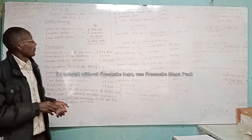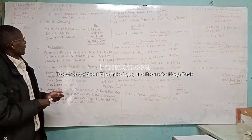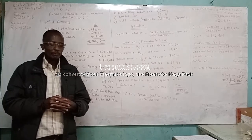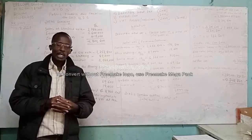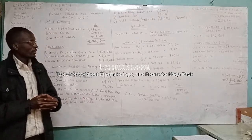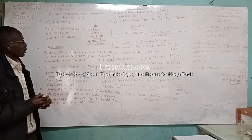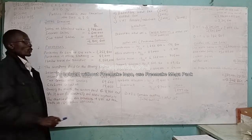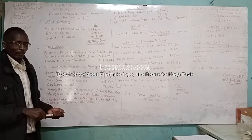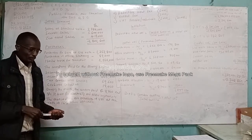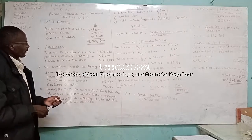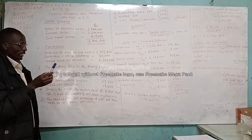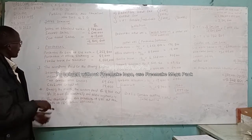We will look at a public finance and taxation paper for ATD, that is Accounting Technician Diploma for CASNEP, which was tested November 2017, question 2c. You can still get that paper from CASNEP. Now let's look at the summary of that question as it appears in the paper.